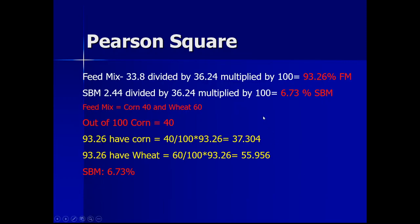Out of the 93.26 parts of feed mix, we now calculate the individual shares. Corn was mixed at 40 parts out of 100, so corn share = 40 ÷ 100 × 93.26 = 37.30 parts. Wheat was mixed at 60 parts out of 100, so wheat share = 60 ÷ 100 × 93.26 = 55.96 parts. Adding corn (37.30), wheat (55.96), and soybean meal (6.73) gives a total of approximately 100 parts.